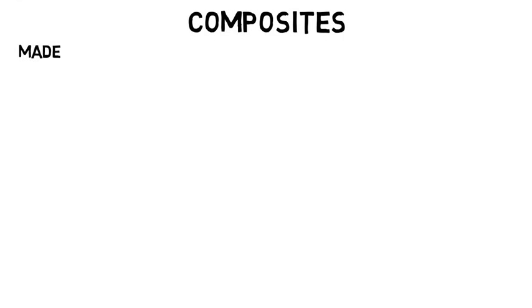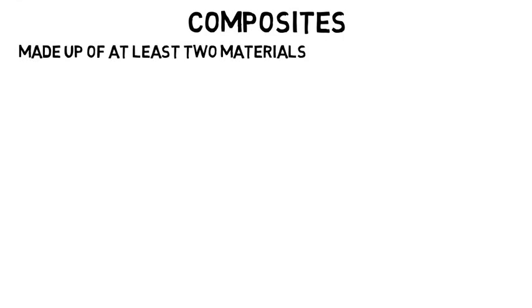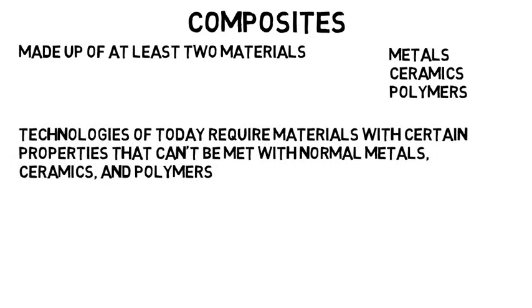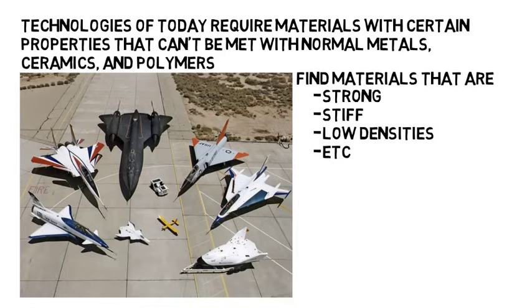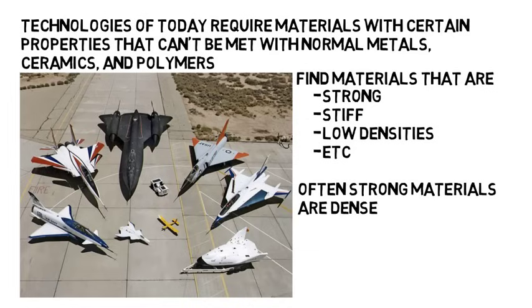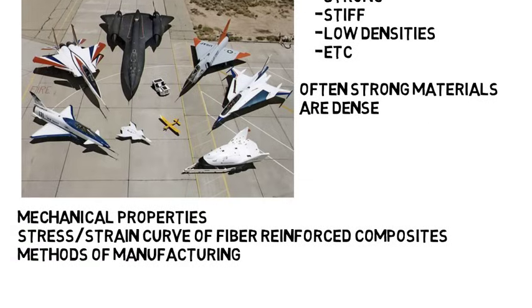Now let's skip to composites — this is something you may take an entire class on in undergrad. Composites are made up of at least two different materials from the other three categories. These are crucial because many technologies today require materials with certain properties that cannot be met with normal metals, ceramics, and polymers. For example, when it comes to aircraft, we need materials that are strong, stiff, and have low densities — a tough combination, since strong materials are often also dense. This is where composites can come in. You'll learn about mechanical properties, look at stress-strain curves of fiber-reinforced composites, and study methods of manufacturing composites.